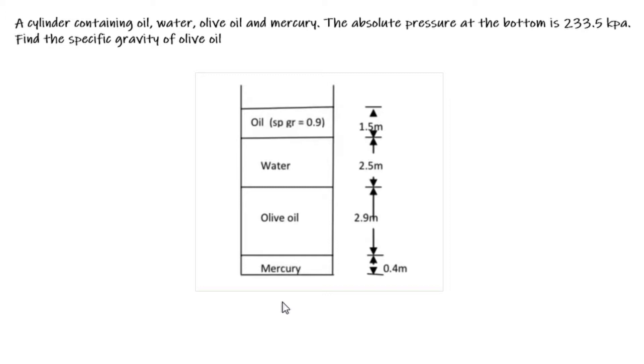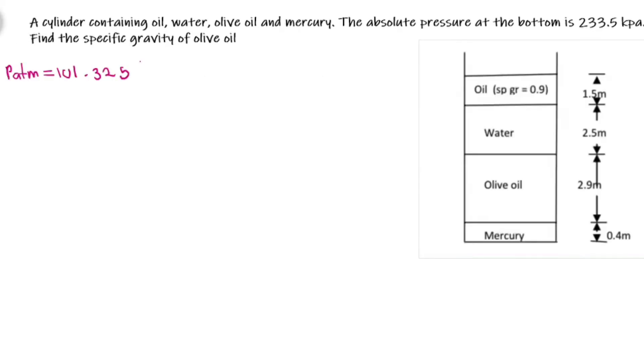Let's assume a temperature that is ambient. We can also assume that the atmospheric pressure is 101.325 kilopascal. Let's write that before we start: atmospheric pressure at 101 kilopascal. We are told that the absolute pressure or the total pressure at the bottom of the tank is found to be 233.5. So we are looking for the specific gravity of olive oil.